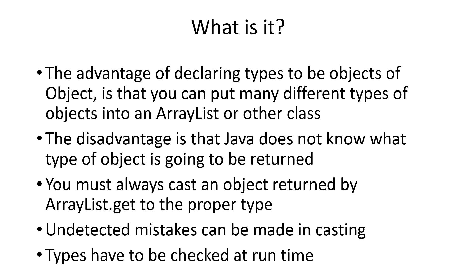The problem is that Java doesn't always know what kind of type it is. There are advantages — if you want an ArrayList holding objects of multiple different types, inheriting from Object works well. But one disadvantage is Java doesn't know what type of object is going to be returned, so you must always cast it to the proper type. There can be mistakes when casting things. If you cast something to a parent class instead of the child class it really is, it'll work but may not be what you want. Also, type checks must be made at runtime as you cast from one type to another.